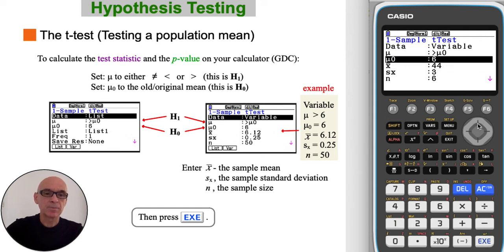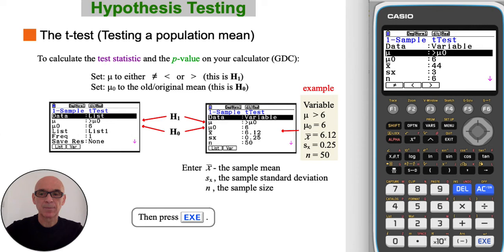Then scroll back up to set the alternative hypothesis. In the example, it was greater than 6, so press F3 for greater than.